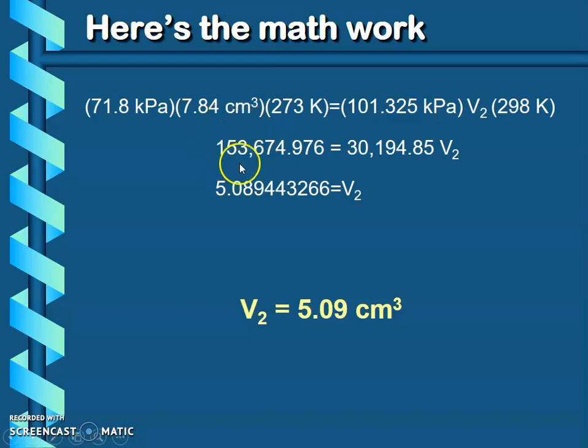Then, to solve for that unknown, remember we always do the opposite, so here we're multiplying. So we divide both sides by that 30,000 number. So we're going to take this big number, 153,674.976, divide by 30,194.85, and our calculator is going to give us this nice big long number here, 5.089, so on and so on.